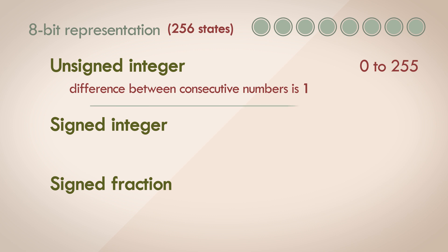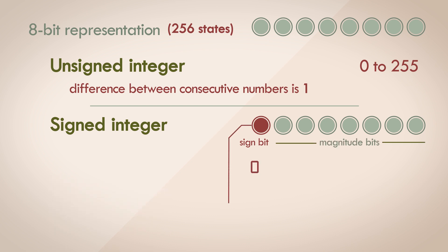If you want negative numbers as well, we can sacrifice 1 bit to store the sign, usually the leftmost bit. And we can use the rest of the 7 bits to represent the magnitude of the number. If the sign bit is 0, the number is positive. And if it's 1, then it's negative. So we can technically store a range of values from negative 127 to positive 127. And again the difference between each consecutive number is 1.